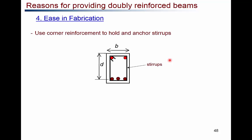A final advantage of compression reinforcement is that it aids the fabrication and placement of stirrups. The compression bars provide anchor points to tie stirrups. If no compression reinforcement is provided, nominal diameter bars must still be provided to hold the stirrups.